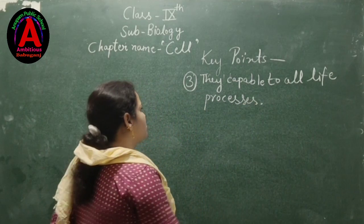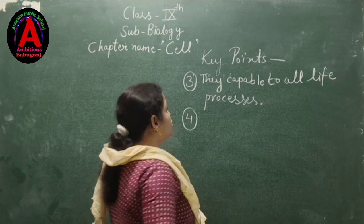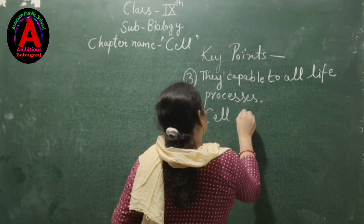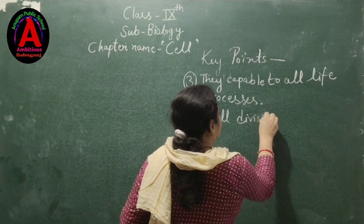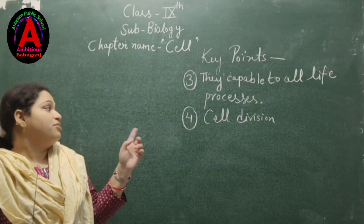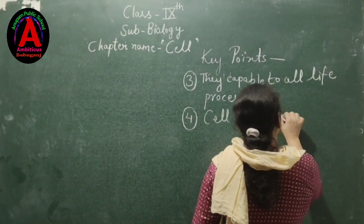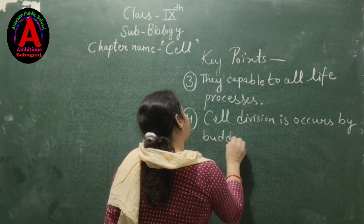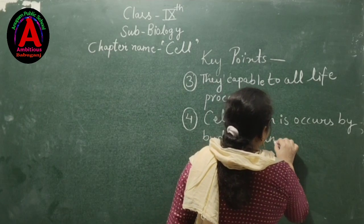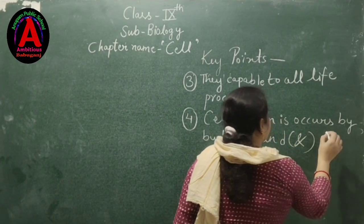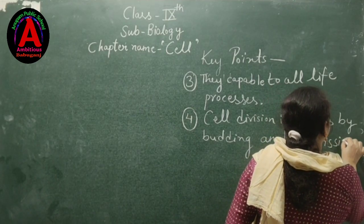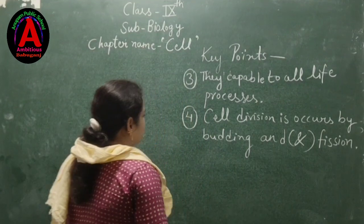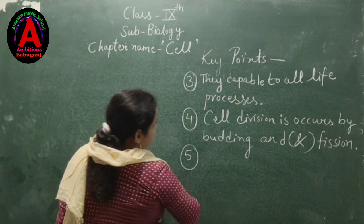The fourth key point of unicellular cells is cell division. Cell division in unicellular organisms occurs by fission and budding.